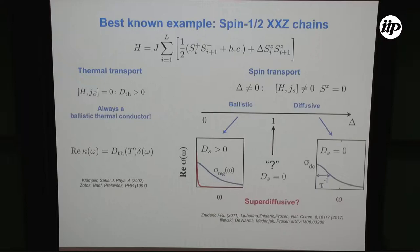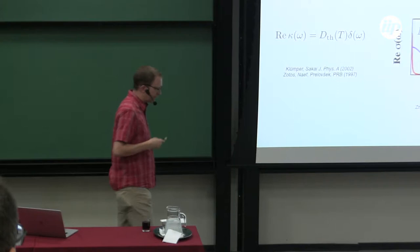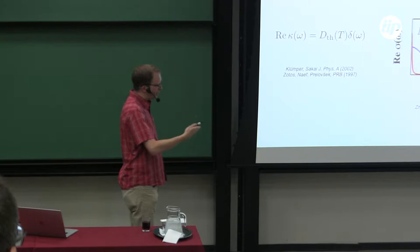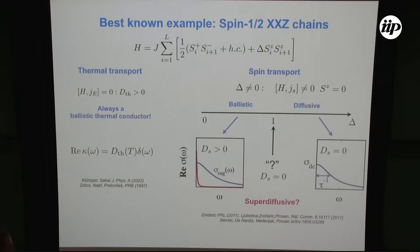Tomasz and collaborators discovered a whole family of quasi-local charges and showed that in the easy-axis regime there is indeed a leading ballistic contribution. That was the first major conceptual breakthrough. At the Heisenberg point, there seems to be no lower bound for the Drude weight, so it's probably zero, consistent with most numerics. More recently, starting with a paper by Markus Žnidarič in 2011 and continued in a Nature Communications from Tomasz's group, there are arguments based on bounding diffusion constants from below that at SU(2)-symmetric points there might be something like superdiffusion.